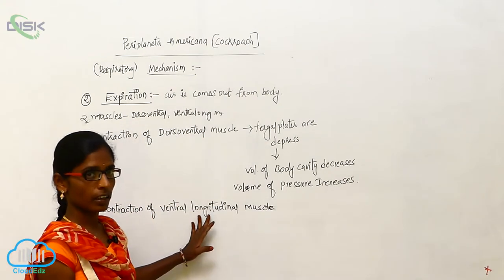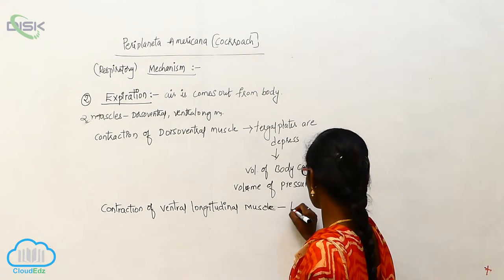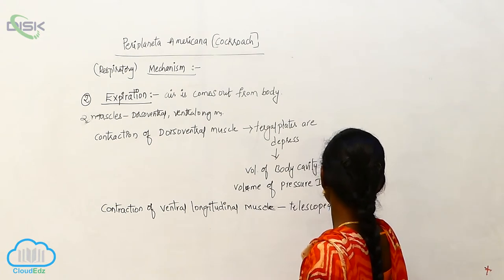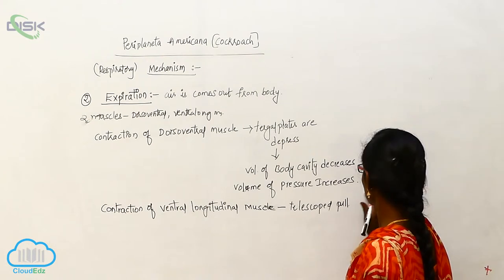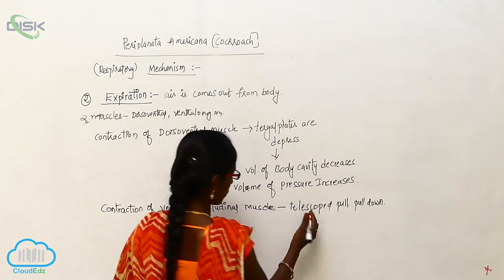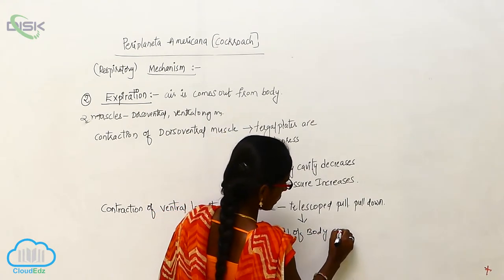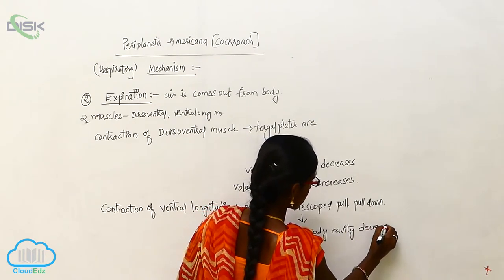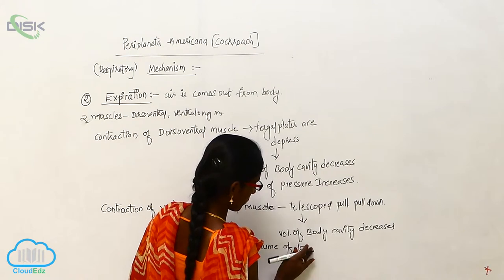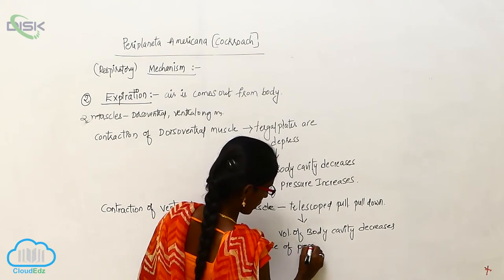Contraction of the ventral longitudinal muscle causes the telescoping segments to pull down. Due to this the volume of body cavity decreases and the volume of pressure increases.